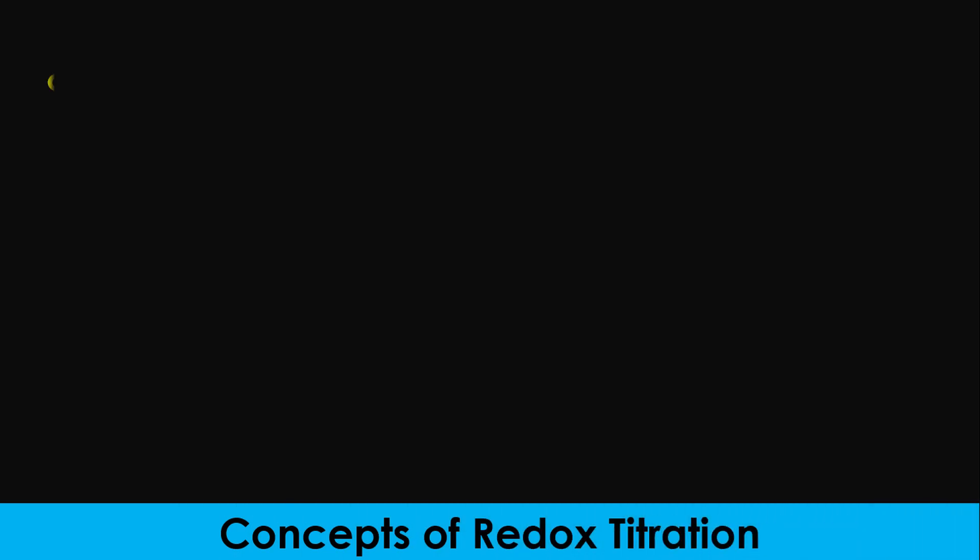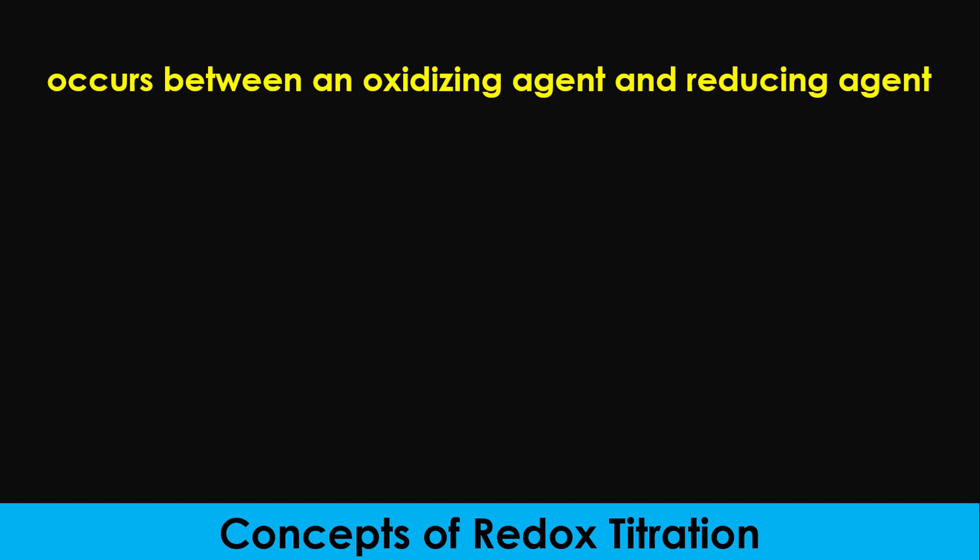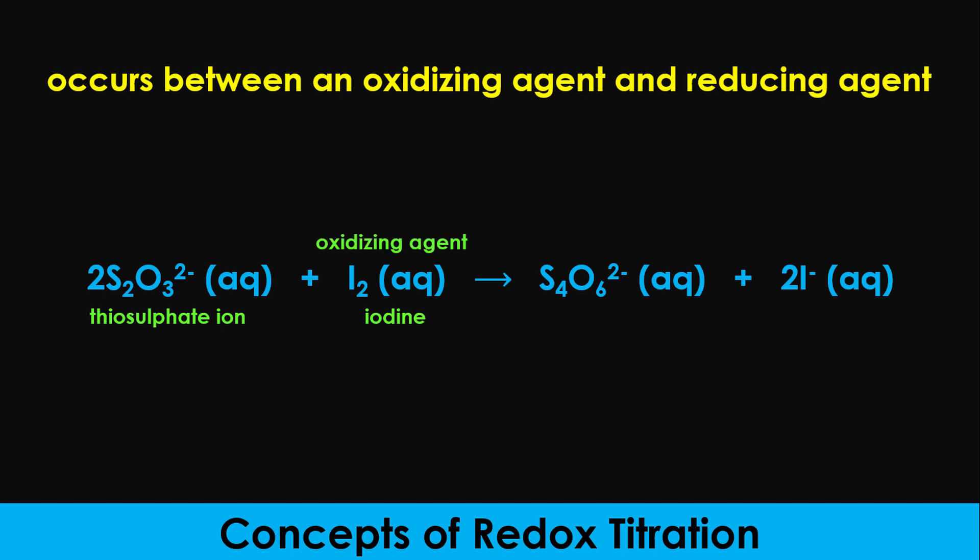A redox titration is one that occurs between an oxidizing agent and a reducing agent. In the reaction between iodine and sodium thiosulfate, iodine is the oxidizing agent while sodium thiosulfate is the reducing agent. The thiosulfate ion reduces molecular iodine to iodide ion while itself is oxidized to tetrathionate ion according to the equation showing on the screen.